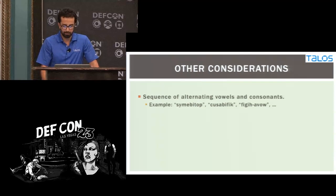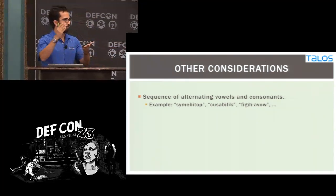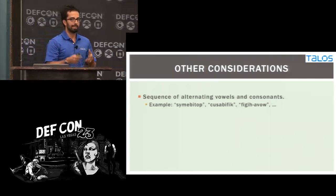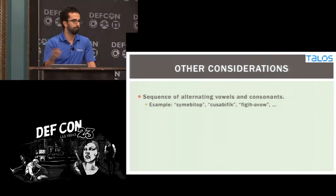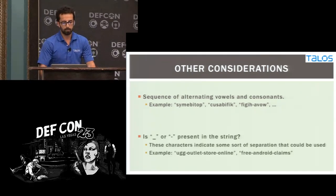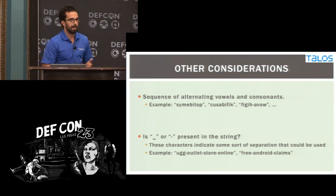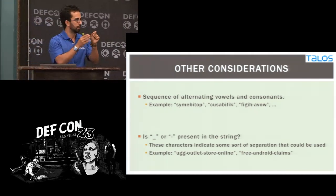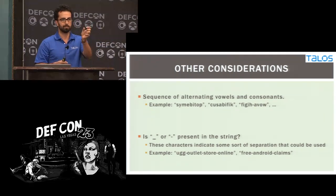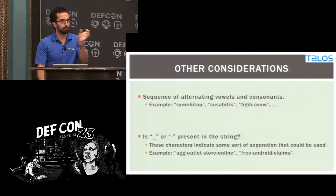A few other considerations: if you have a sequence of alternating vowels and consonants, it can look legitimate even when random, so I apply a penalty when I see that pattern. Also, if I see a dash or underscore in the string, that indicates a natural separation point. I treat that as a separator and look at each piece separately.